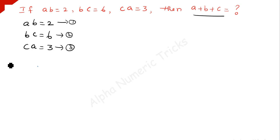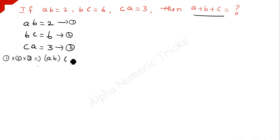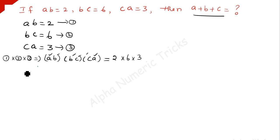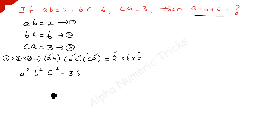To find the values of A, B, C, what we are going to do is multiply all three equations together. Equation 1 times 2 times 3 — multiply the left-hand sides together and the right-hand sides together. AB times BC times CA is equal to 2 times 6 times 3. Here A occurs twice, B occurs twice, and C occurs twice. So we have A squared times B squared times C squared equal to 36. Let's number this equation 4.